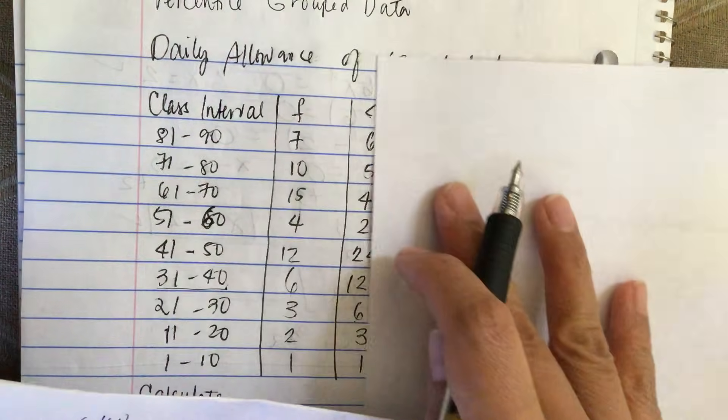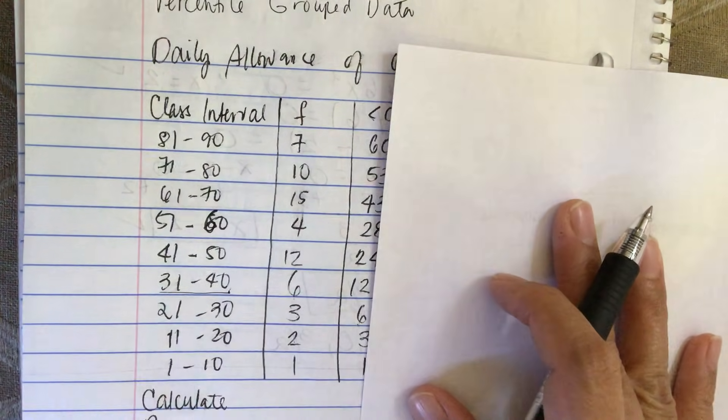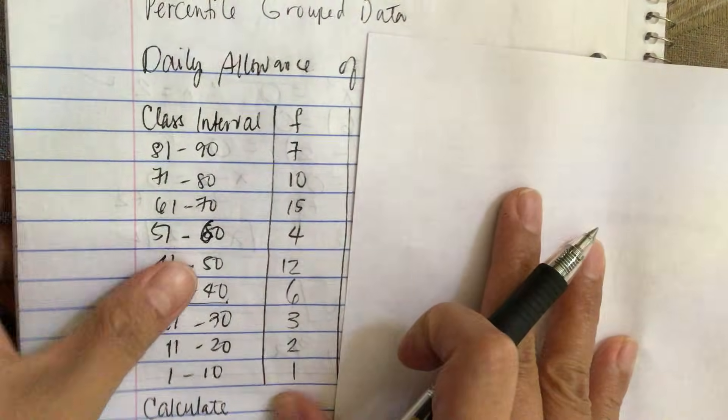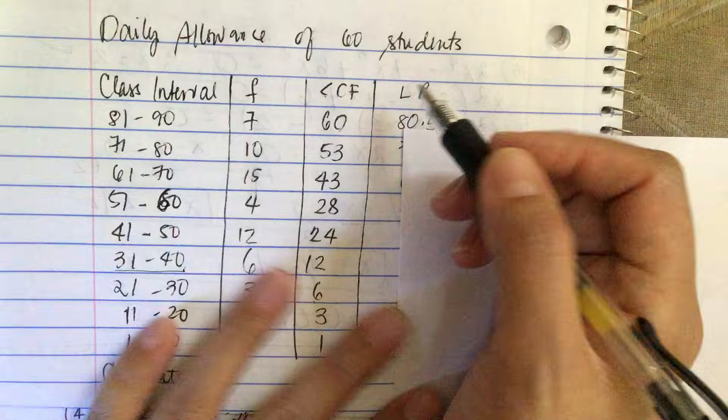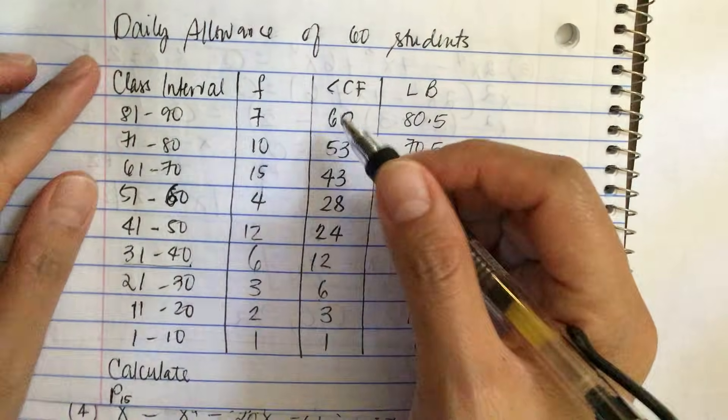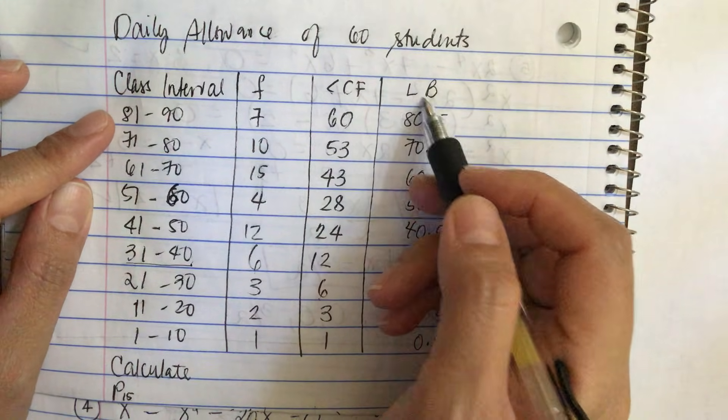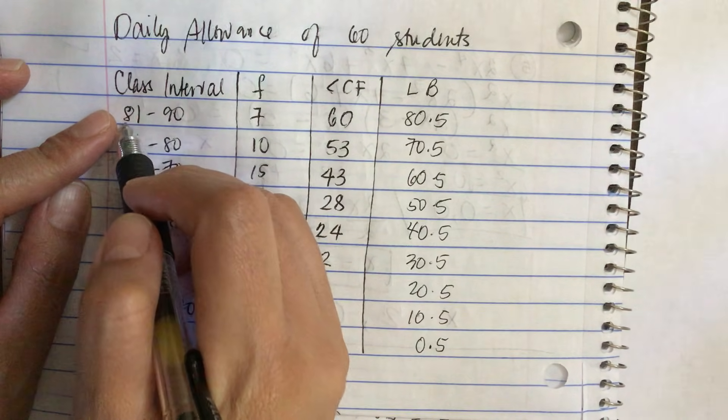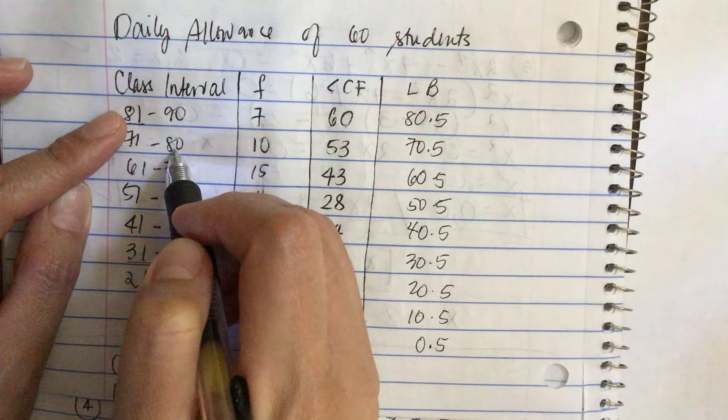Since we need the lower boundary, we need to add another column. So I did that already. To find the lower boundary, it's simply the average of 81 plus 80.